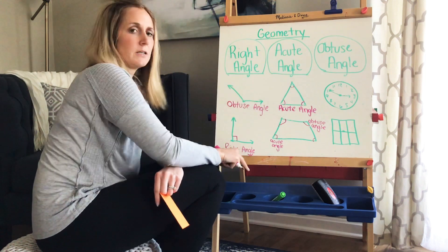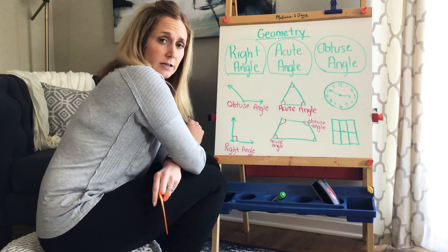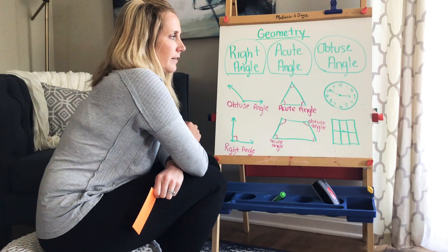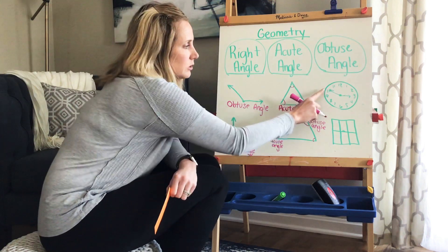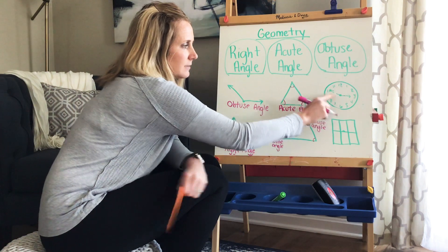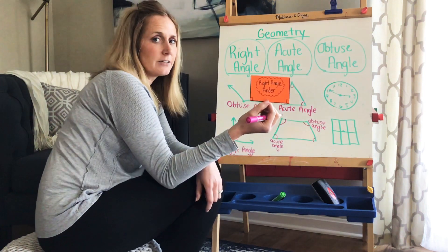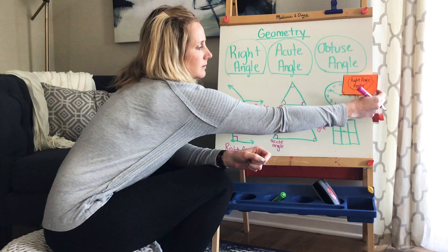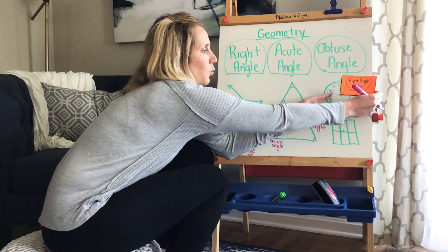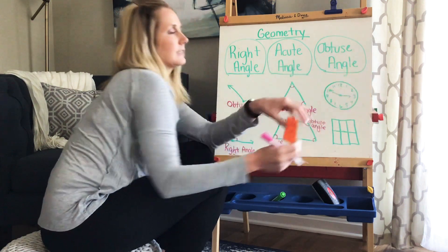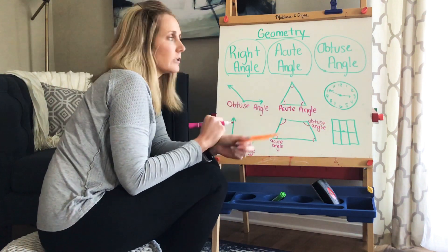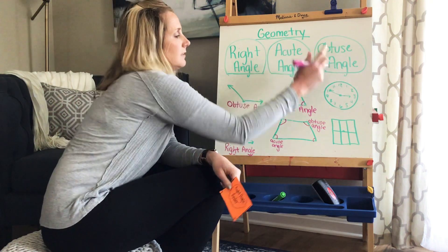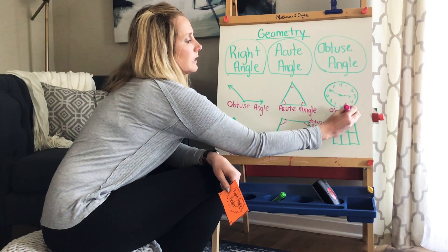Now we've done it with regular angles and shapes. I looked around my house — I looked at my clock and the hour and minute hands, and I thought: that looks like two rays forming a vertex, which is an angle. When I use my right angle finder and match up my bottom lines, I notice this is wider than 90 degrees. Wider — bigger than 90 degrees — makes me think of 'obese,' which makes me think of 'obtuse.' This is an obtuse angle.